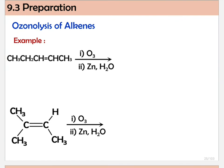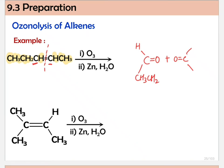For the first example, we have a specific alkene and ozonolysis occurs — the double bond undergoes cleavage. We rewrite C=O plus C=O. For this carbon, we have hydrogen and CH2CH3, and for the other carbon, we have hydrogen and CH3. Make sure you are bonded to the correct carbon. So here, both products are aldehydes — we get two aldehydes. This depends on the alkene used.